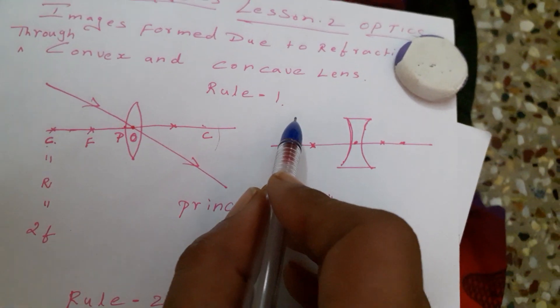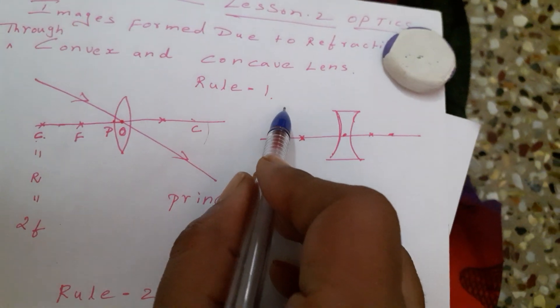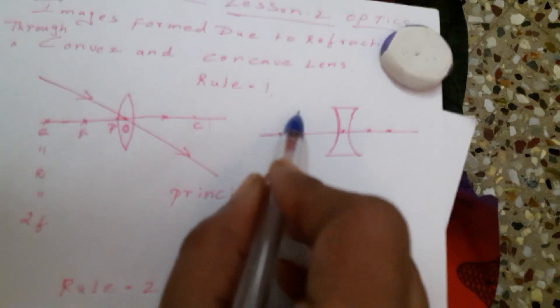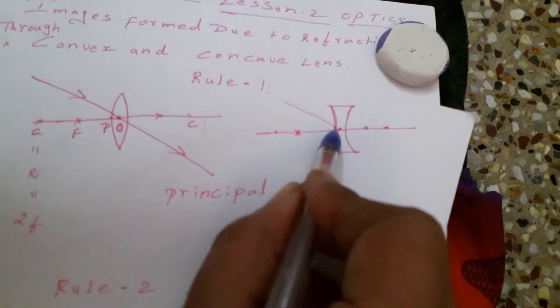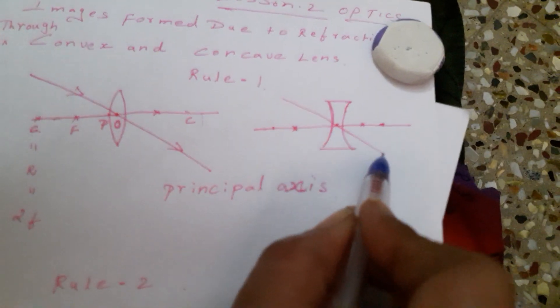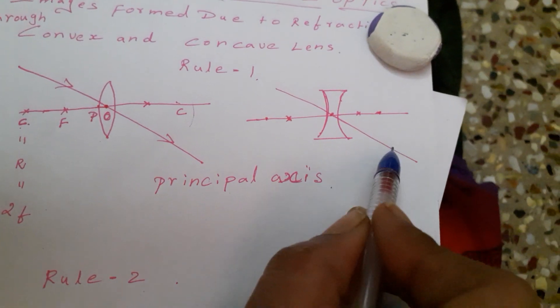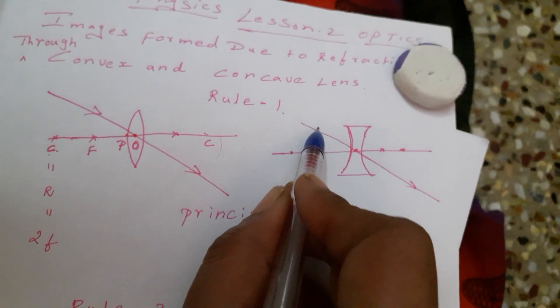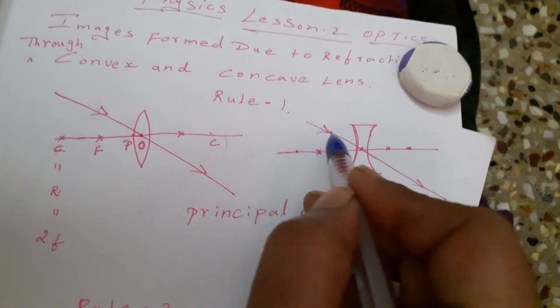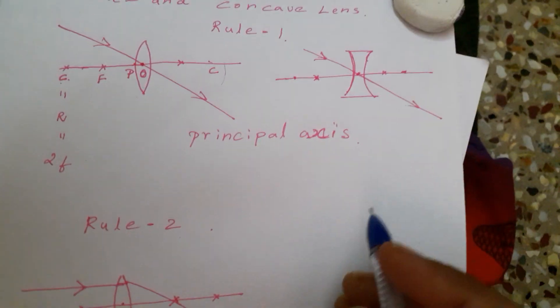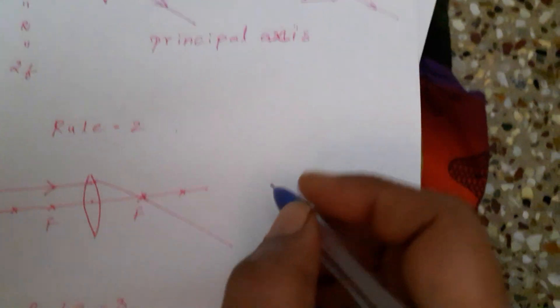The light ray which is passing through the optic center won't refract — it will continue its path in the same way. This is your first rule.